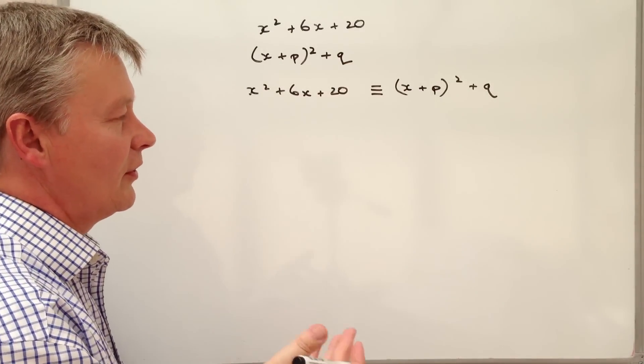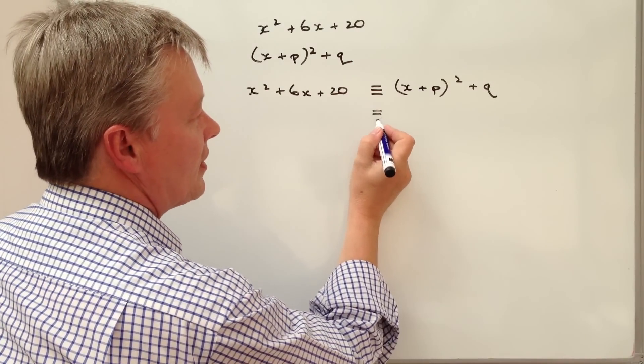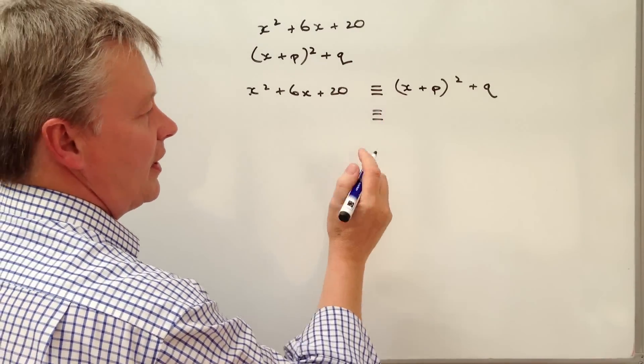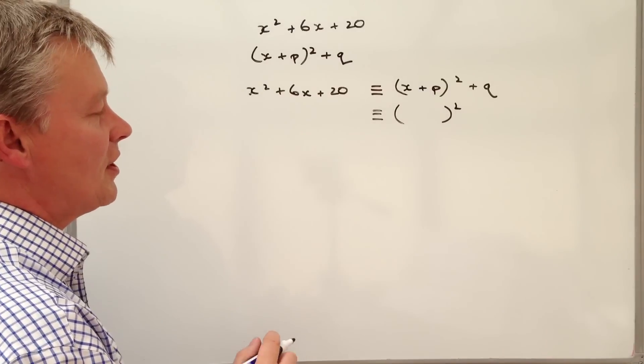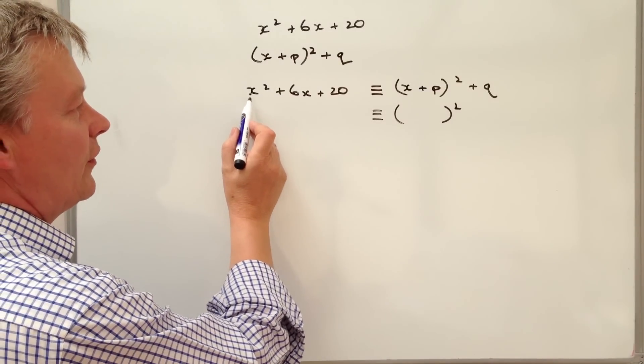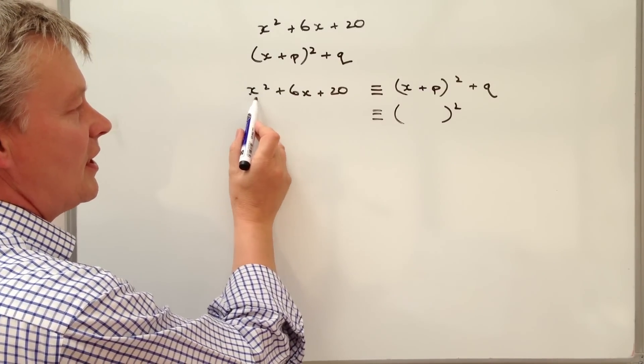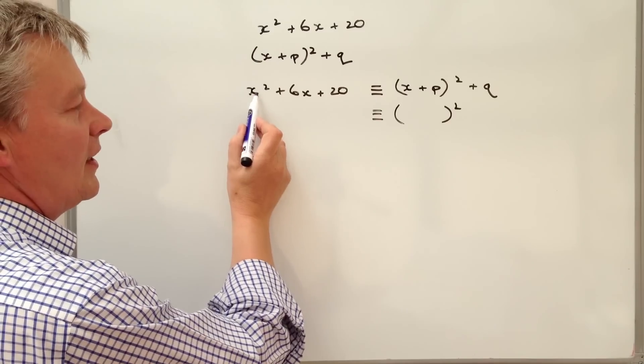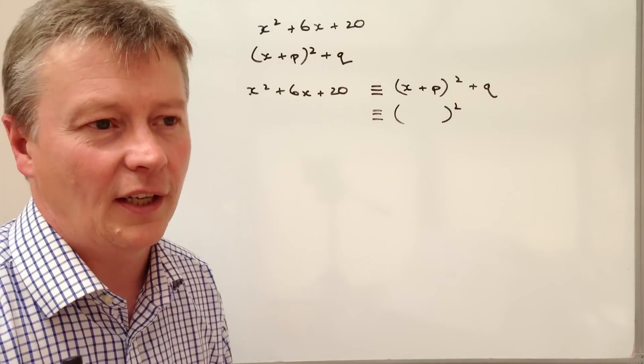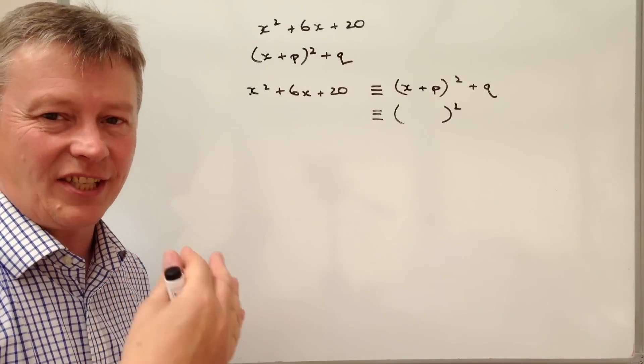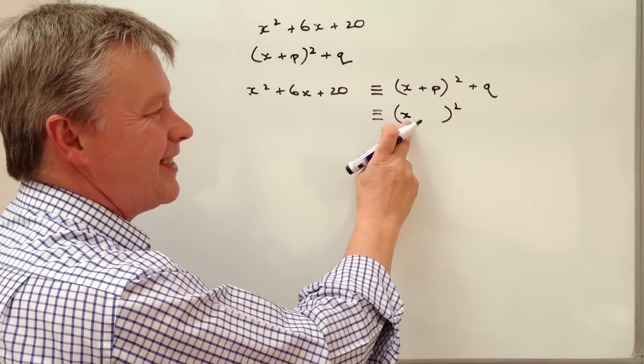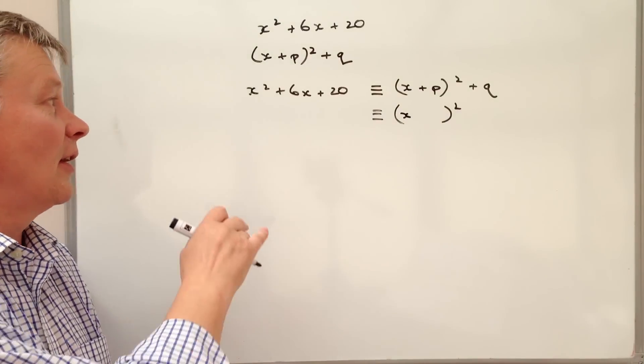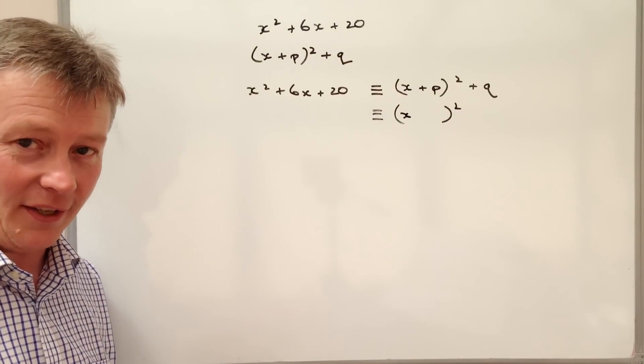So the rule is or the way to deal with something like this is to look at this as a squared term. So the first thing is is that we've got this x squared plus 6x. So x squared, well as x squared is x times x, then we can put x into there because x squared is going to be x squared.